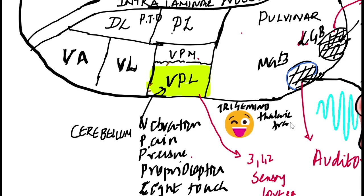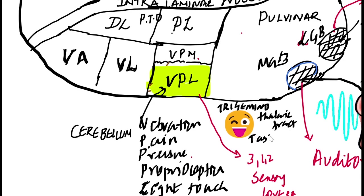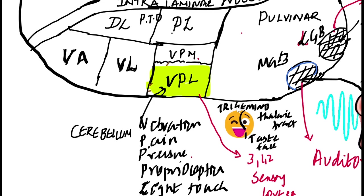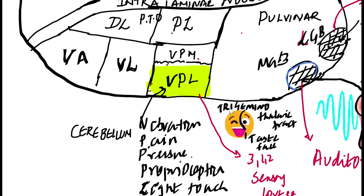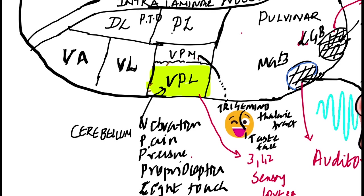What does this tract carry? Taste sensation and face sensation — trigeminal. The trigeminal is the fifth cranial nerve. So the afferent goes to the VPM nucleus.